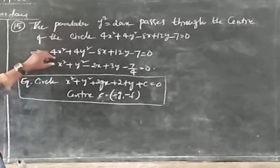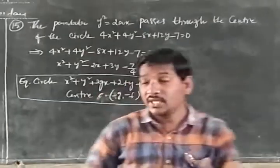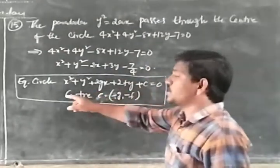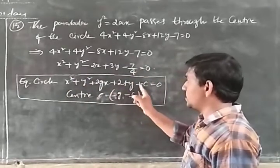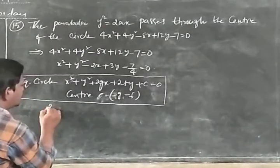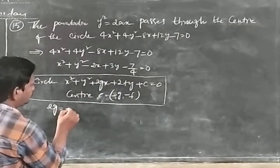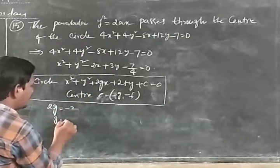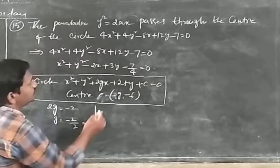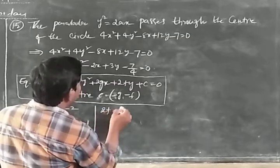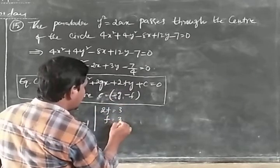We have the equation x² + y² − 2x + 3y − 7/4 = 0. Comparing with the standard form x² + y² + 2gx + 2fy + c = 0, we get 2g = −2, so g = −1, and 2f = 3, so f = 3/2.